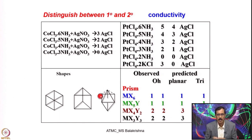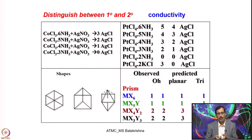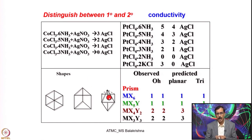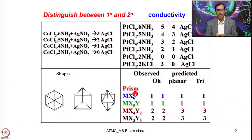Let me come to the establishment of octahedral geometry for secondary valency 6. When you have coordination number 6, you have 3 geometry options: hexagonal planar, trigonal prismatic, and octahedral — where trigonal antiprismatic is equivalent to octahedral. When he made a homoleptic complex of type MX6 with one type of ligand and tried to fit it into these geometries, all geometries gave only one isomer, so it was inconclusive.